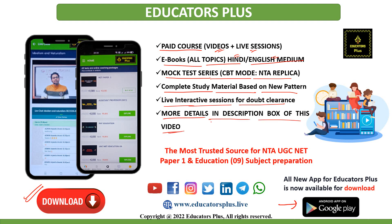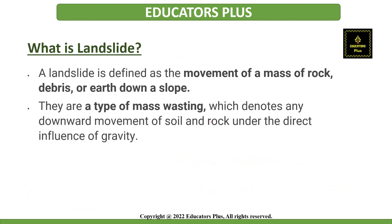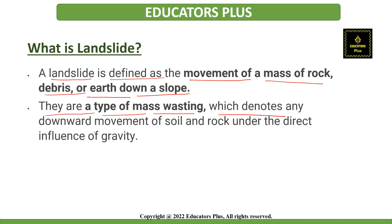So now let's start with the topic that is Landslide. The basic idea is to understand what a Landslide is. A landslide is defined as the movement of a mass of rock, debris, or earth down a slope. They are basically a type of mass wasting, which denotes any downward movement of soil or rock under the direct influence of gravity.